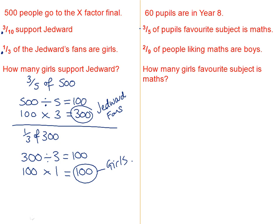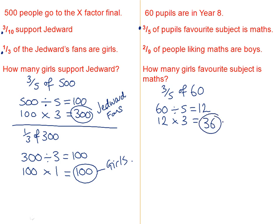So again, we take it step by step. First step: three-fifths of people's favourite subject is maths, so we want to work out three-fifths of 60. We take our 60, divide by the bottom number, which is 5 — that will give us 12. We then take our 12 and multiply it by the top number, which is 3. That gives us 36. So 36 people's favourite subject is maths.